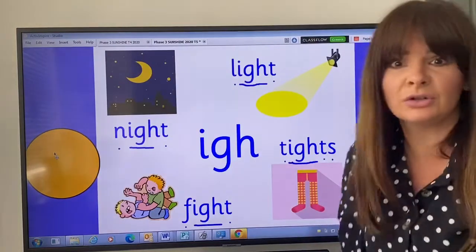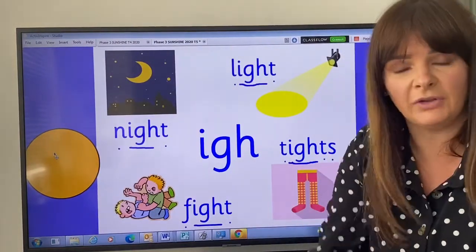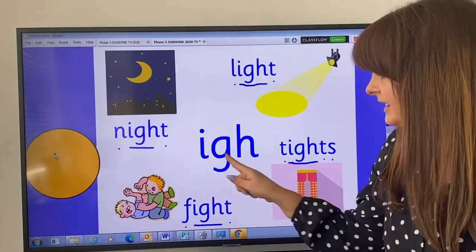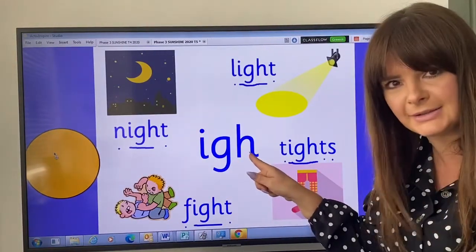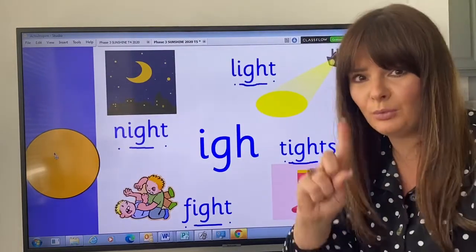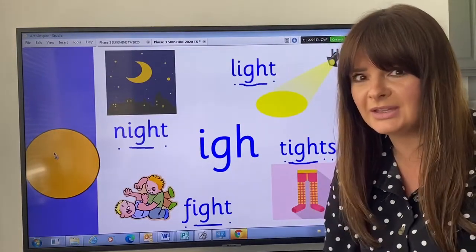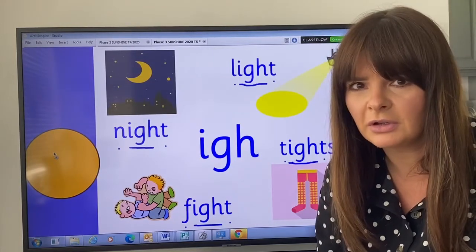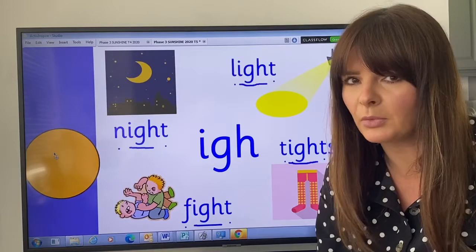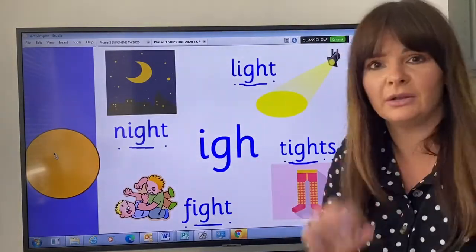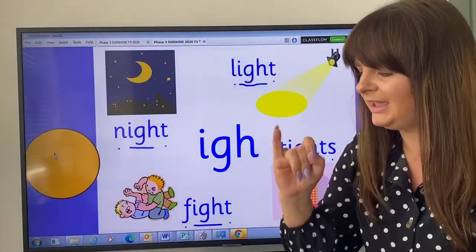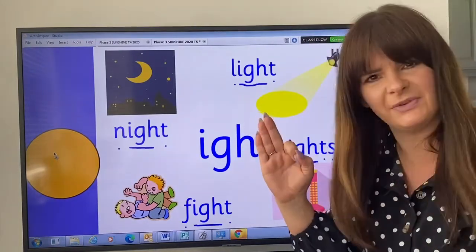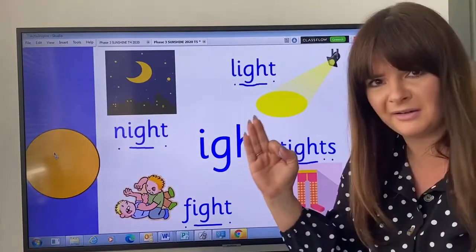Now this is not a digraph. We're used to the digraphs. They have two letters, don't they, and one sound. This has one, two, three letters. Three letters, but one sound. So it's called a trigraph. Can you say that for me? Trigraph. That's a really, really grown-up word. But a trigraph has three letters.